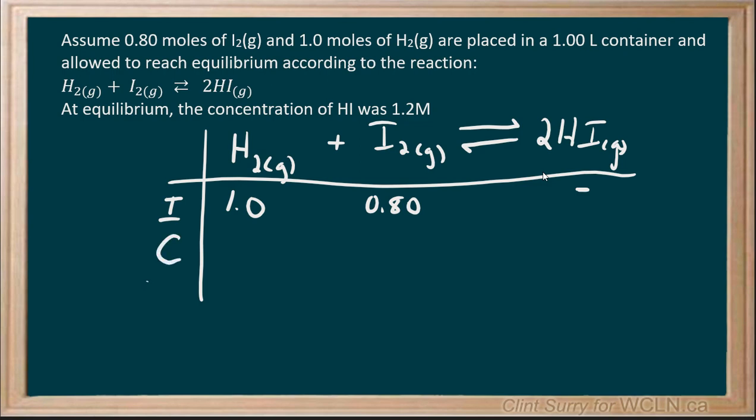We're going to figure out what the change is and work with what happens at equilibrium. We're told that at equilibrium we have 1.2 molar of hydrogen iodide.